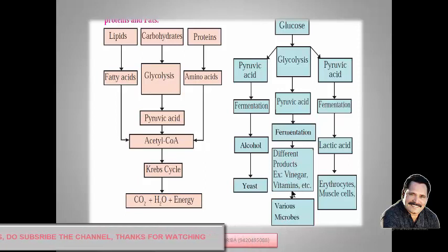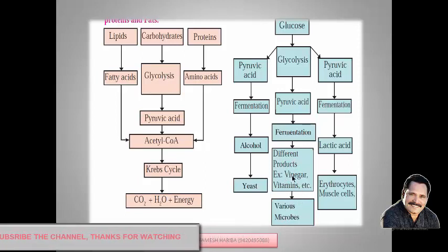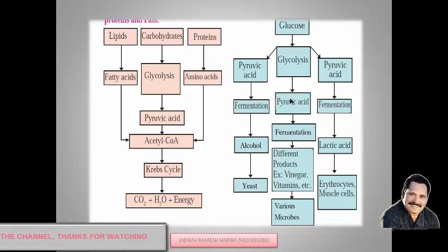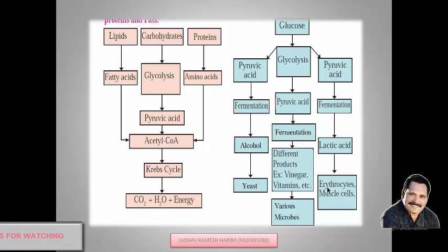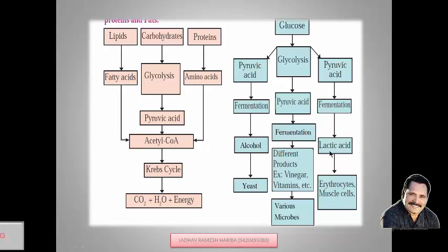In various microorganisms, various products are formed like vinegar and vitamins, along with two molecules of ATP being produced. In the same process — glycolysis followed by fermentation — pyruvic acid gets converted into various products. In muscle cells or erythrocytes, pyruvic acid after fermentation gets converted into lactic acid.